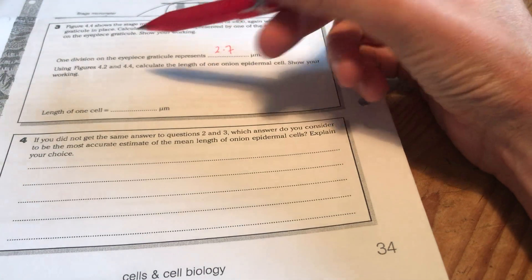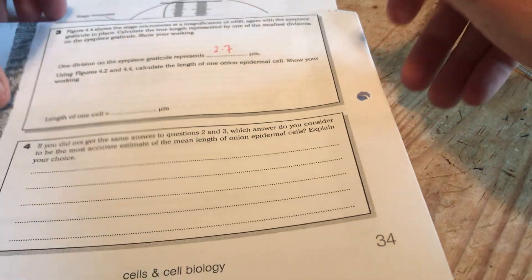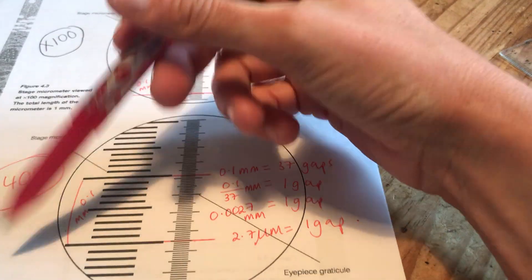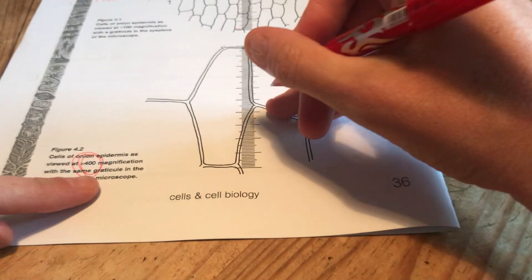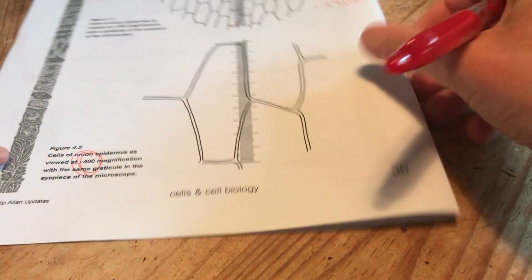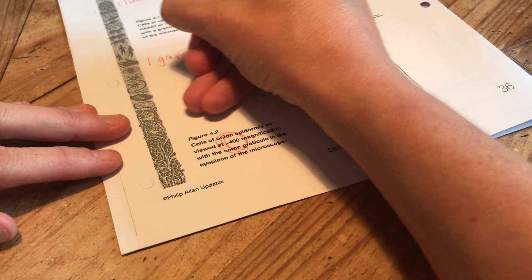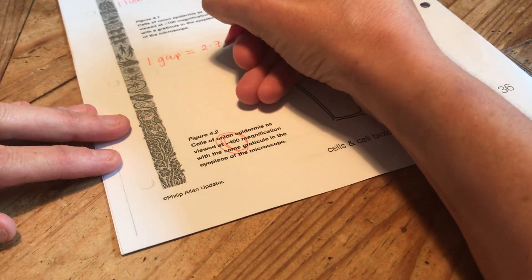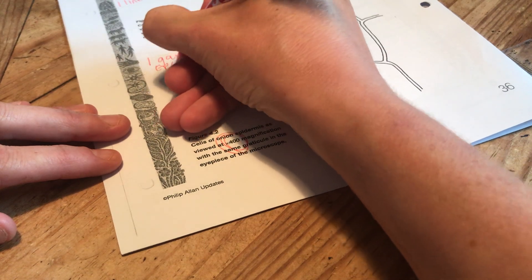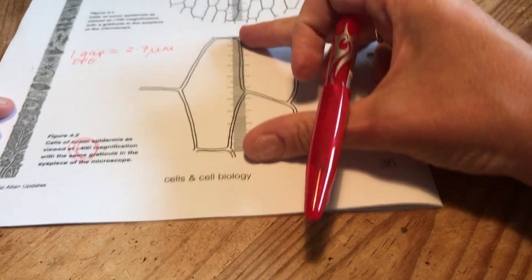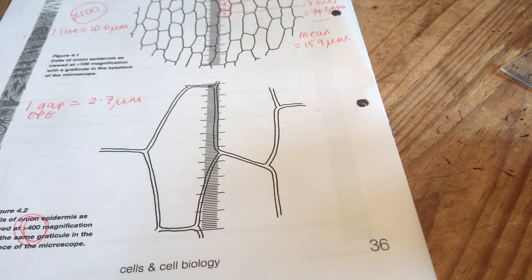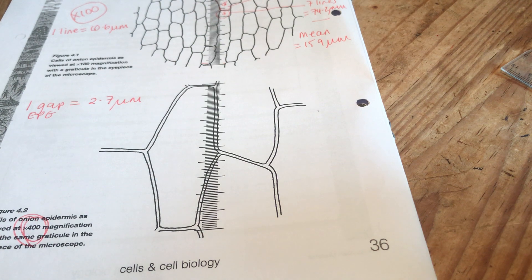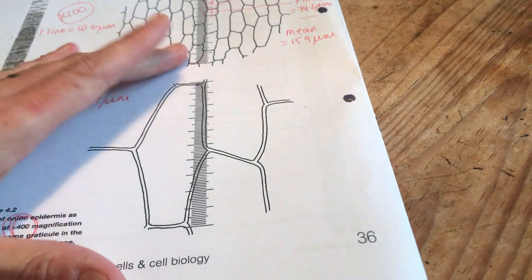And then use figure 4.2 and 4.4 to calculate the length of one onion epidermal cell. So 4.4 and 4.2. So this is times 400 magnification. I've just worked out that one gap equals 2.7 micrometres. This is one gap on the eyepiece graticule. This is my eyepiece graticule again. So I'm hoping you're getting to the point now where you're going through your corrections by yourself, not just watching the video. Pause anything. I can actually do this now. Try and have a go at the rest of the sheet on your own. If you can't, carry on. That's fine.